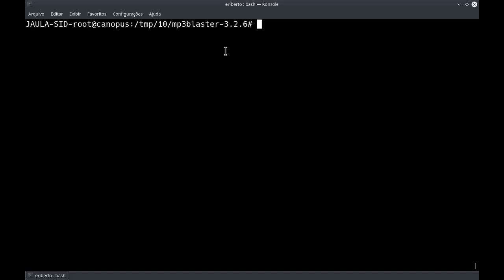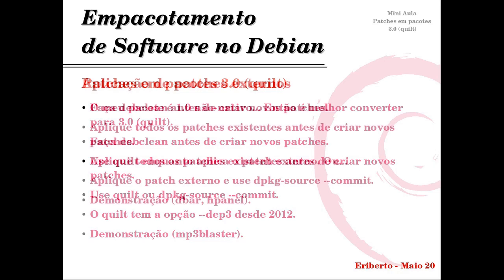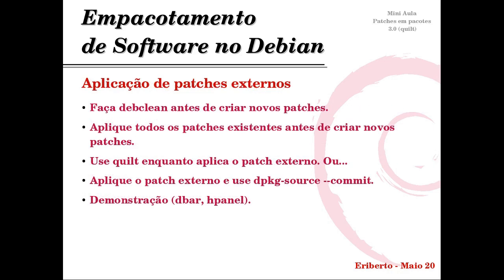Eu recomendo que usem isso. Lembrando que antes tem que fazer um debclean e aplicar todos os patches com quilt push -a. Voltando aqui, nós vimos então como fazer o patch usando quilt ou dpkg-source --commit, que tem a opção dep3. Agora nós vamos ver como se faz a aplicação de patches externos — algum patch que esteja, por exemplo, no GitHub ou no sistema de bugs do Debian, o Bug Track System, para resgatar esses patches e aplicar no nosso pacote.